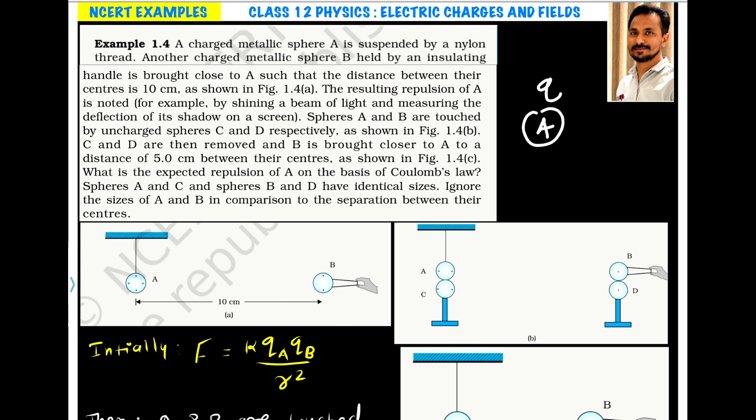Here, if sphere A has charge QA, then on making it in contact with C, the new charge on A will be QA by 2 and on C will be QA by 2. Similarly, if sphere B has charge QB and is touched with D, the charge will distribute equally among the spheres when they are identical.